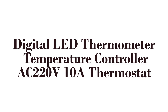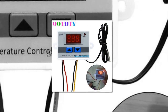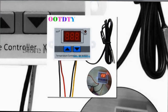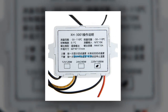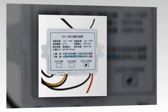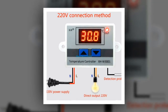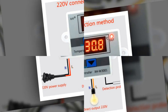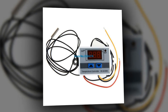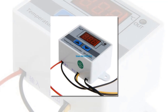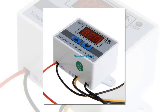Here is product number three: digital LED thermometer temperature controller, AC 220V, 10A thermostat. Material: electrical components. Temperature measuring range -50 to 110 degrees. Temperature control range -50 to 110 degrees. Temperature measurement accuracy plus or minus 0.2 degrees. Temperature control accuracy plus or minus 0.1 degrees. Input power according to classification of choice.